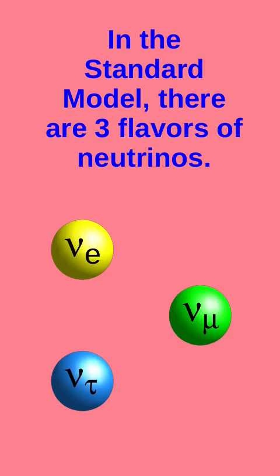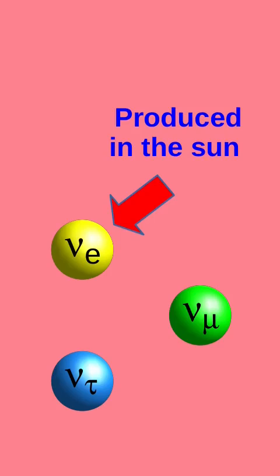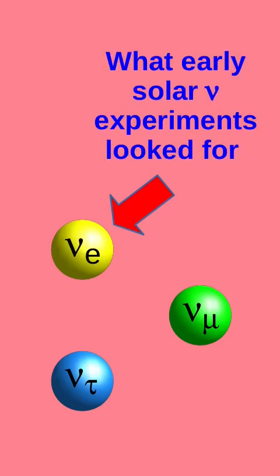In the standard model, there are three flavors of neutrinos: electron, muon, and tau. Electron neutrinos are what are produced in the Sun, and that's what early solar neutrino experiments looked for.